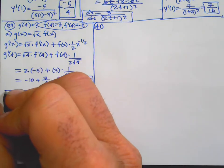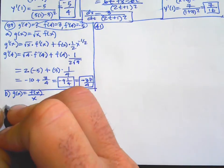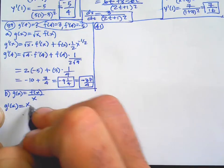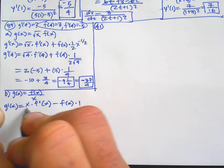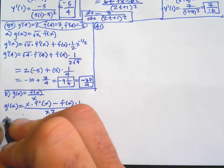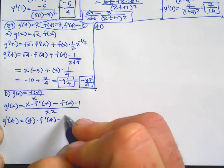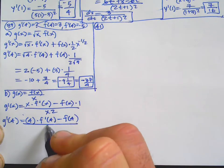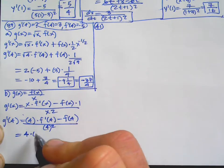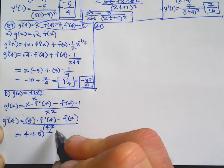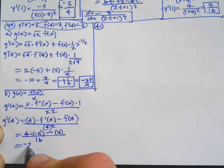Part b: g(x) equals f(x) over x. Quotient rule: low d-high minus high d-low over low squared. Plugging in 4 — f prime(4) is negative 5, f(4) is 3 — gives negative 20 minus 3 over 16, which is negative 23 over 16.